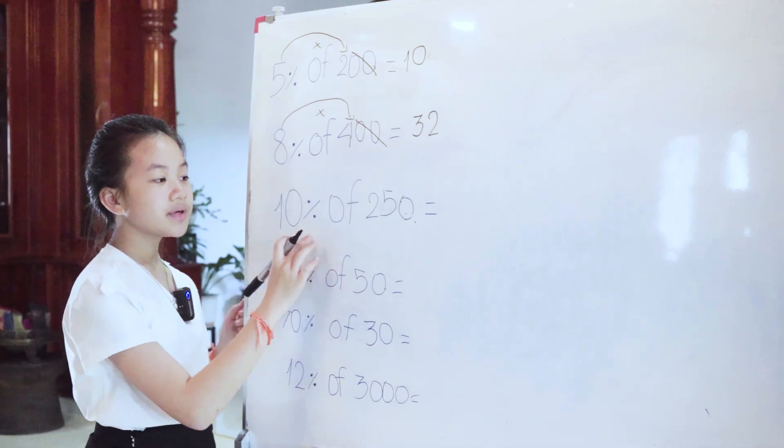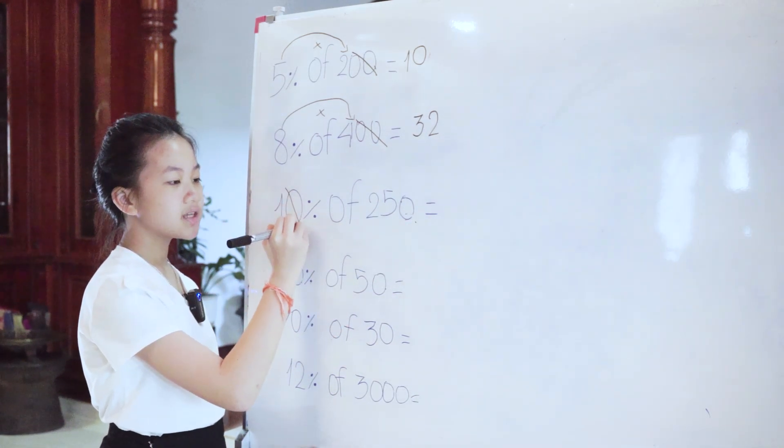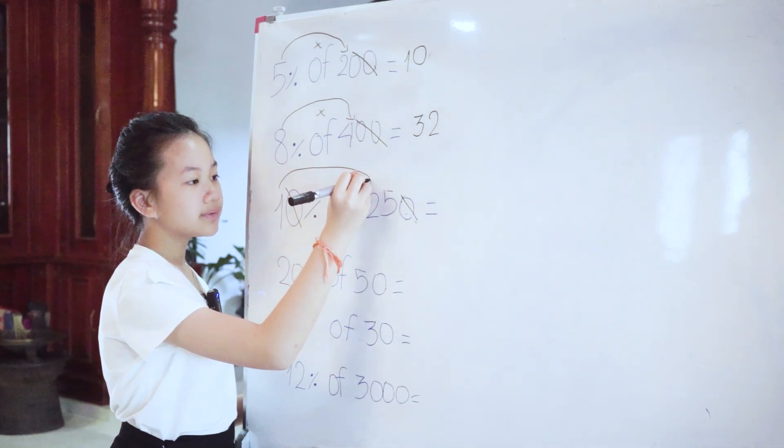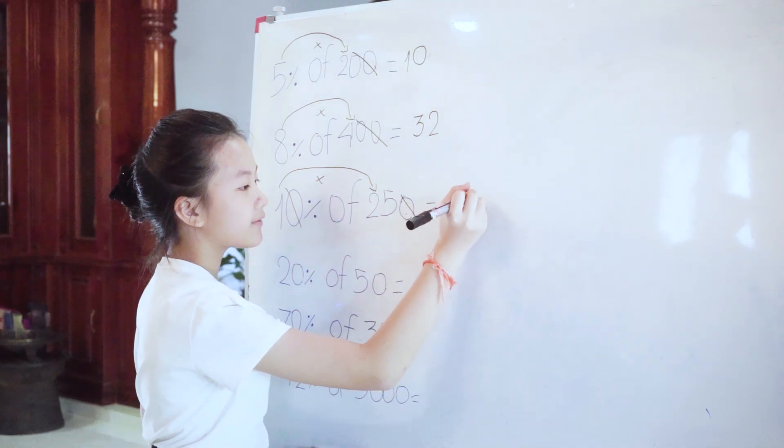10% of 250, cut zero here, cut zero here. 1 x 25 equals 25.